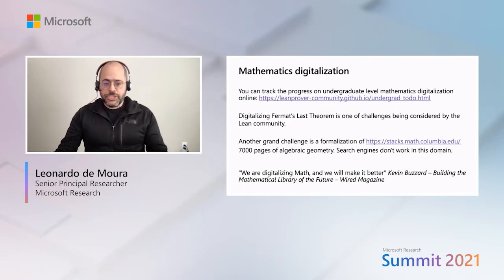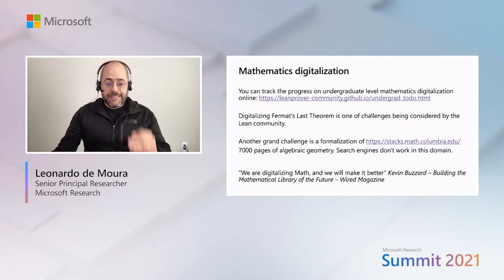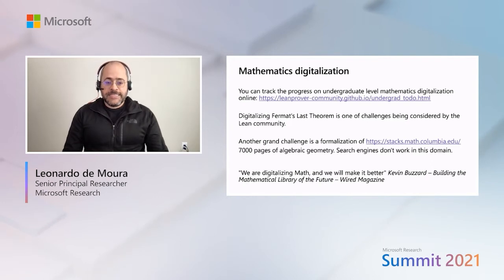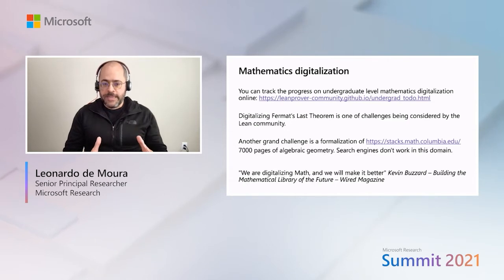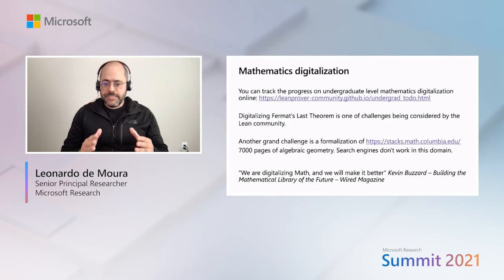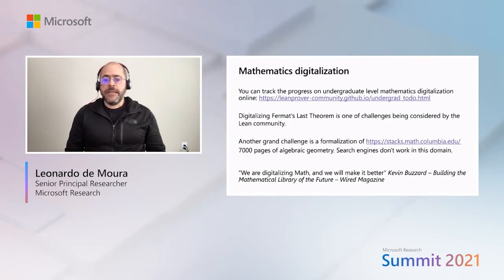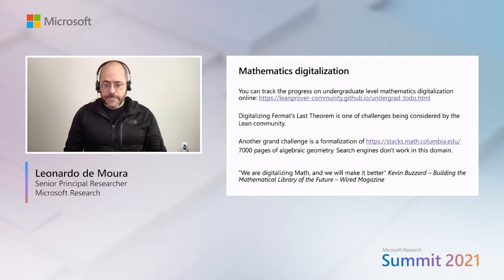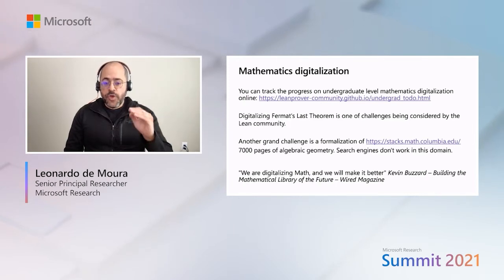Another grand challenge is the formalization of the Stacks library. This library contains more than 7,000 pages of algebraic geometry. This is a valuable source of information, but search engines do not work well in this domain — today they cannot answer basic questions such as, has this theorem been proved before? We believe AMI will make a big difference here. As Professor Buzzard says, we are digitalizing math and we will make it better.